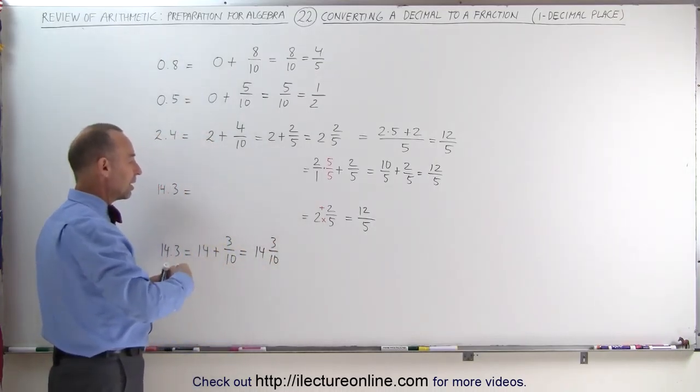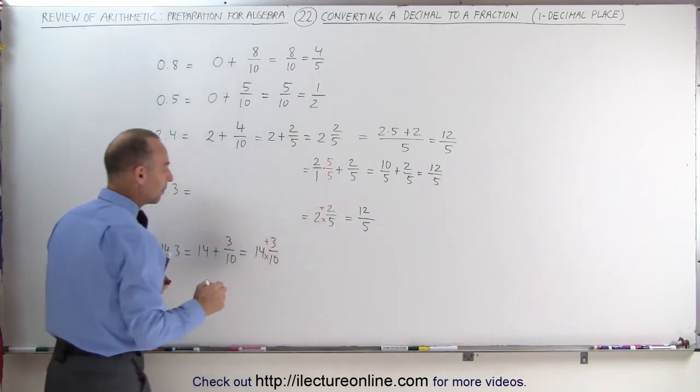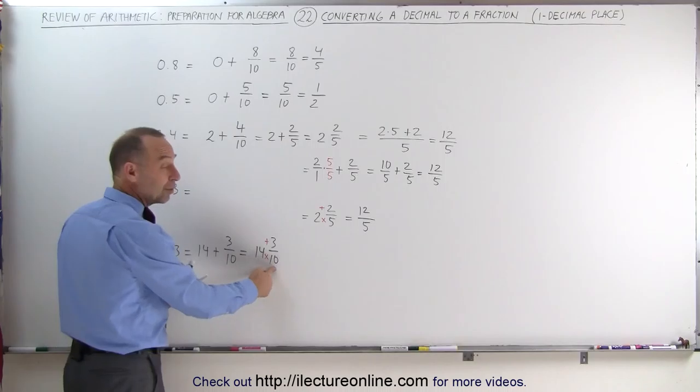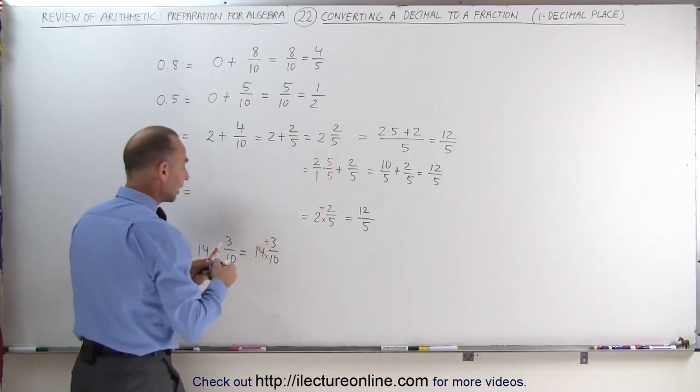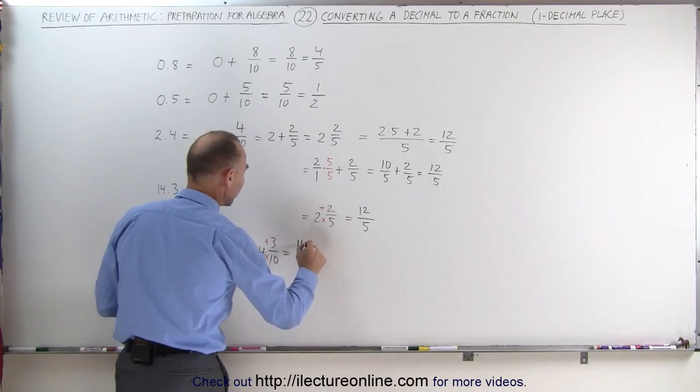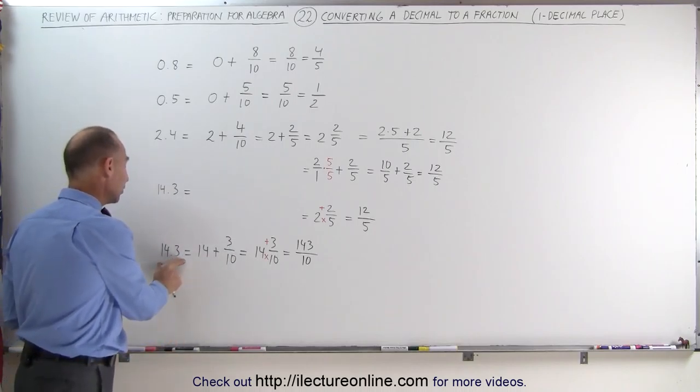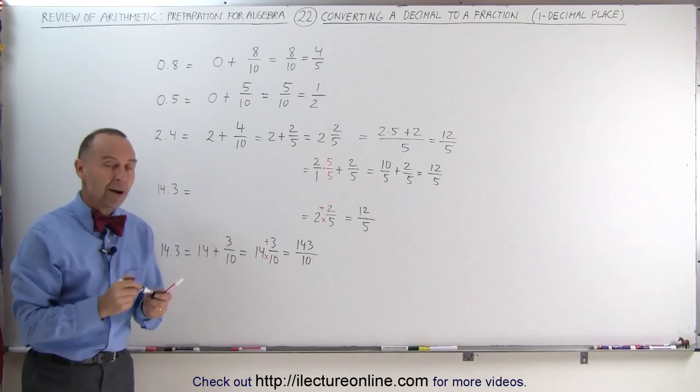And again, our little trick here, we write a little multiplication sign at the bottom and a little plus sign at the top. This now becomes 14 times 10, well we simply add a 0, 14 times 10 is 140, plus 3, that gives us 143 divided by the denominator 10. And that's how we convert a decimal into either a mixed number or an improper fraction.